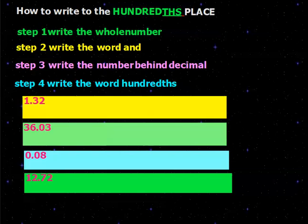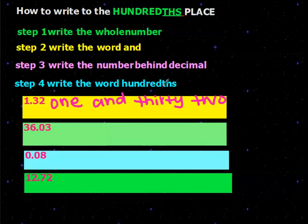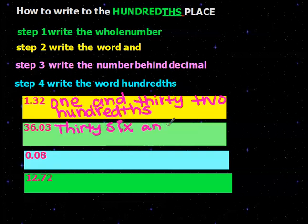A quick review of how we write numbers in the hundredths place value. First, write the whole number — here we have 1, so we start with one. Step two: write the word 'and,' which represents the decimal. Then write the full number behind the decimal — here we have 3 and 2, which makes 32. So: one and 32 hundredths. For the next example, the whole number is 36, so write 36, then 'and.' We have no tenths but three in the hundredths place value, so: 36 and 3 hundredths.